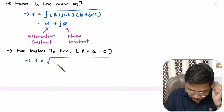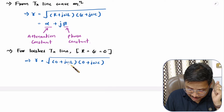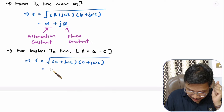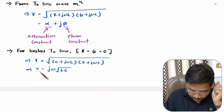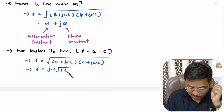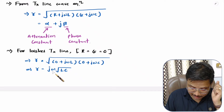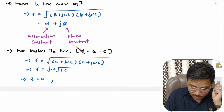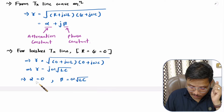So gamma = √[(0 + jωL)(0 + jωC)] = √(j²ω²LC). Taking j common at the output and omega inside the square root gives √(LC). So for a lossless transmission line, the propagation constant is jω√(LC). Therefore, the attenuation constant alpha is zero, and the phase constant beta is ω√(LC).